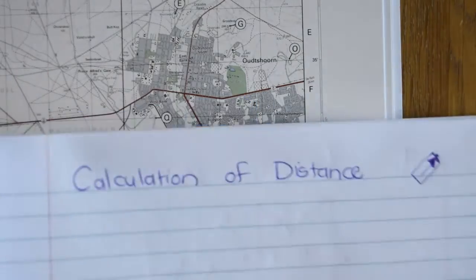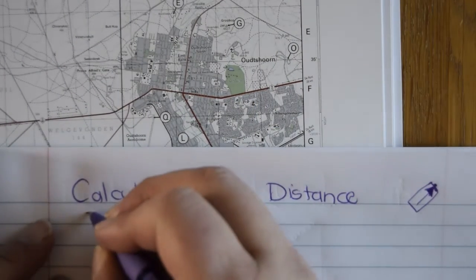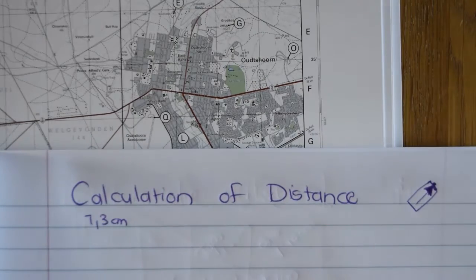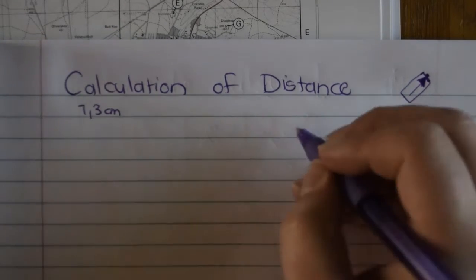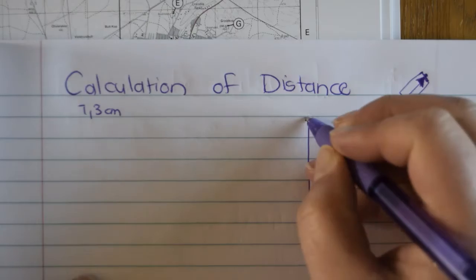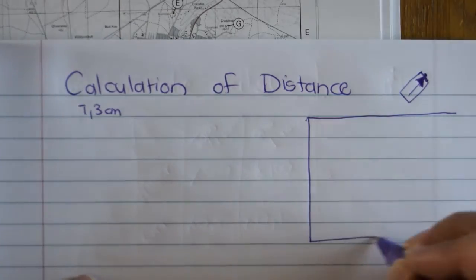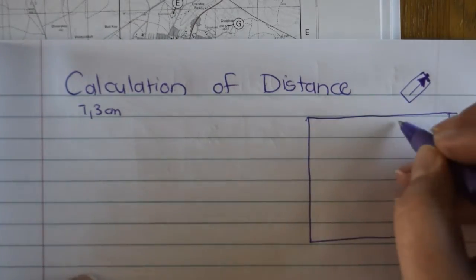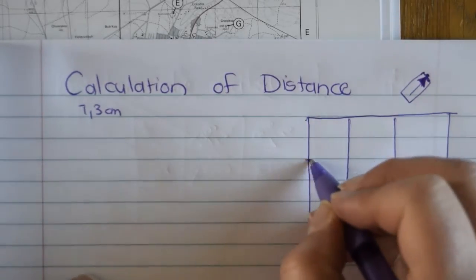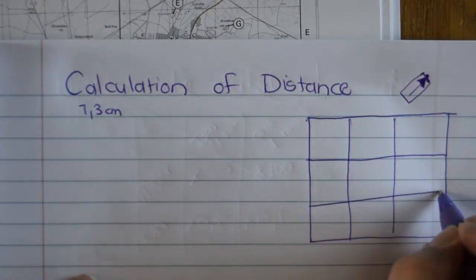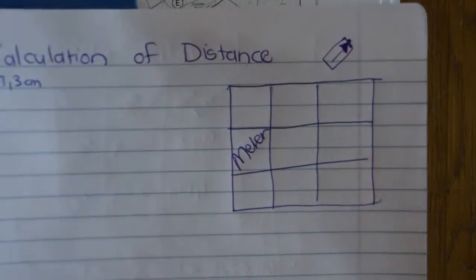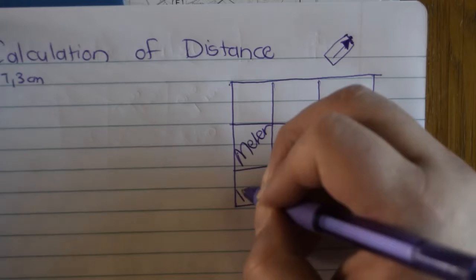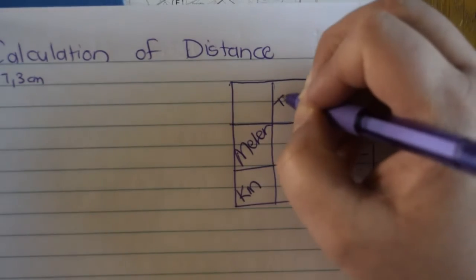So you will just start and say, okay, 7.3 centimeters, but now you need to figure out by what do I multiply this. Now I usually told my kids and you guys are my kids now, you draw yourself this table. It consists of three columns and three rows. This row is when you take it to meter and this row is when you take it to kilometer. This will be your topographical, which is 1 to 50,000 and this will be your ortho, which will be 1 to 10,000.